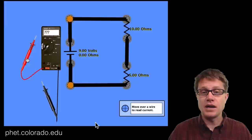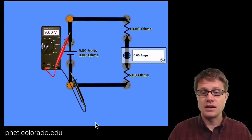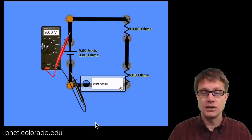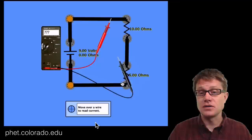Now if we do a PhET simulation with that same circuit, we get a 9 volt potential difference and 0.6 amps — the same current through every part of the circuit. We can then verify the voltages: across the first resistor it is 6 volts, and across the second resistor, using the voltmeter across that element, it is 3 volts.